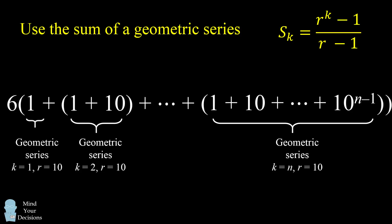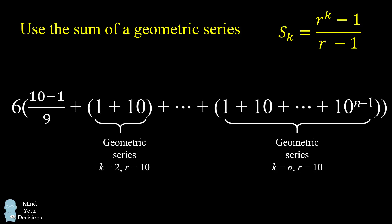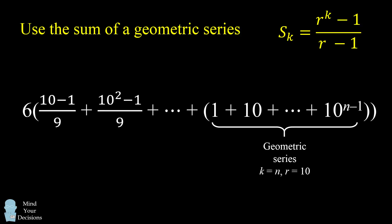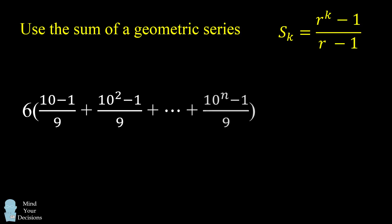So 1 can be rewritten as 10 minus 1 divided by 9. 1 plus 10 can be rewritten as 10 squared minus 1 over 9. And we can keep writing each of these grouped terms in that way until the very last term, which we will get as 10 to the power of n minus 1 all over 9.